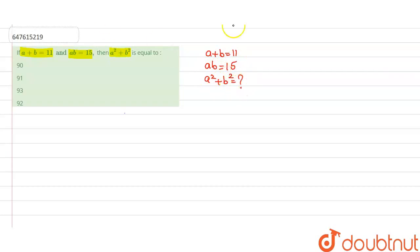As we know, A plus B whole square equals A square plus 2AB plus B square. A plus B is given as 11, so 11 square equals A square plus 2AB. 2 into AB, which is 15, plus B square.